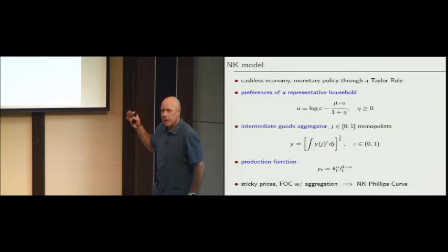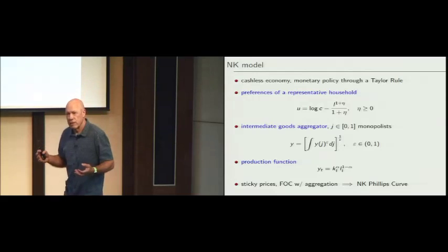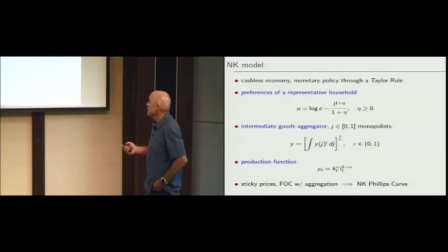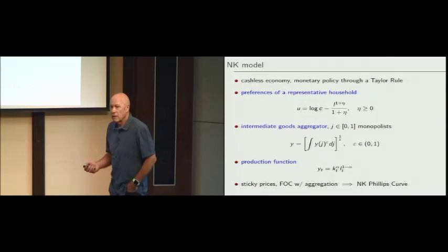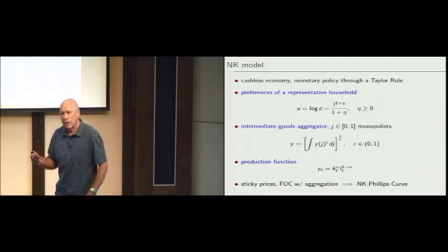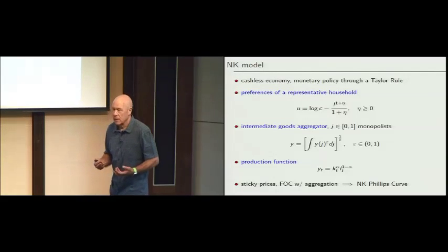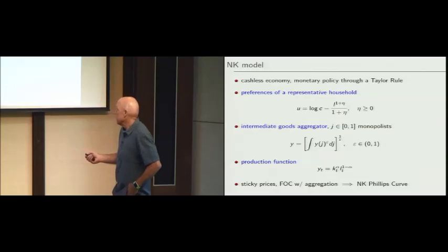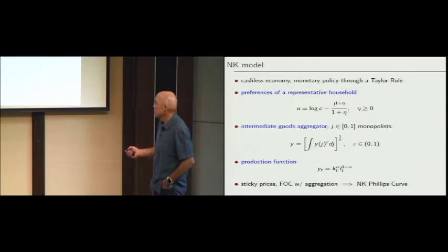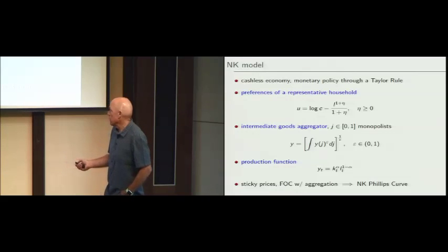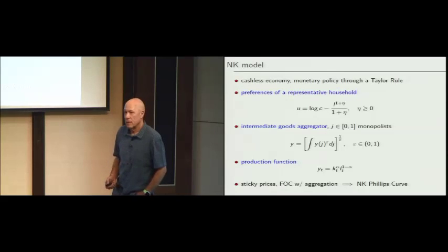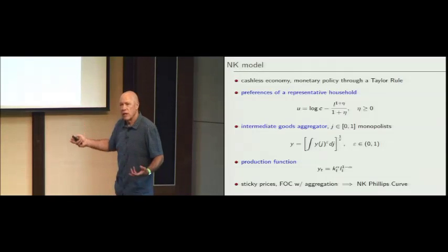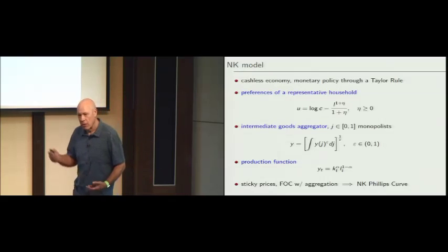So, standard New Keynesian model — you can look this up in any paper, they're all basically the same, with a few bells and whistles. Preferences of a representative household: consumption and leisure. There's going to be an intermediate goods aggregator — intermediate good producers of the Dixit-Stiglitz type, with little monopolists who can set prices. The final goods producer produces and sells competitively. Epsilon represents how competitive this industry is, and there are J firms. The production function with capital is a standard Cobb-Douglas. Take the first-order conditions, do the aggregation properly, and we end up with the New Keynesian Phillips curve.